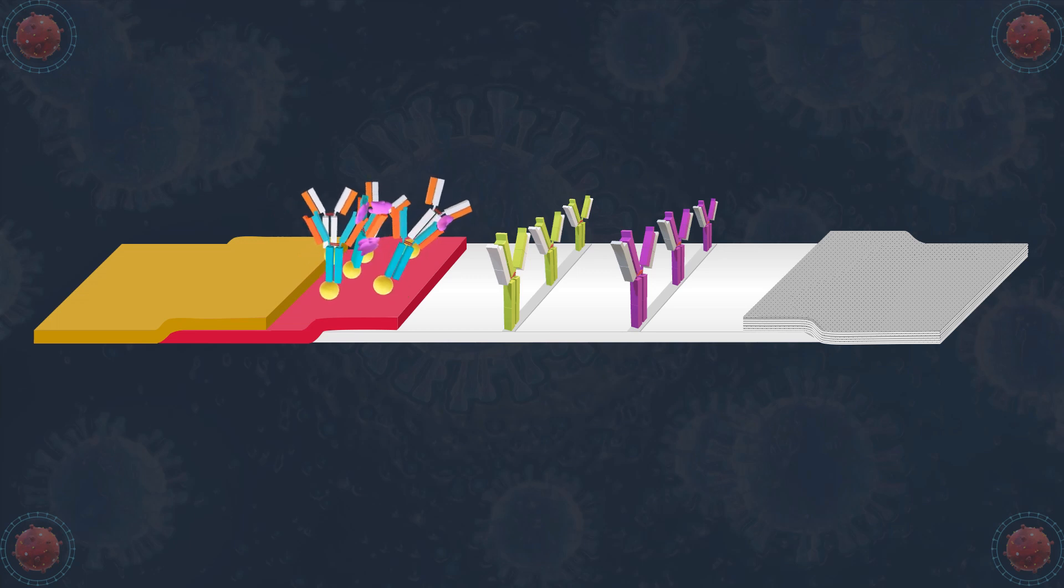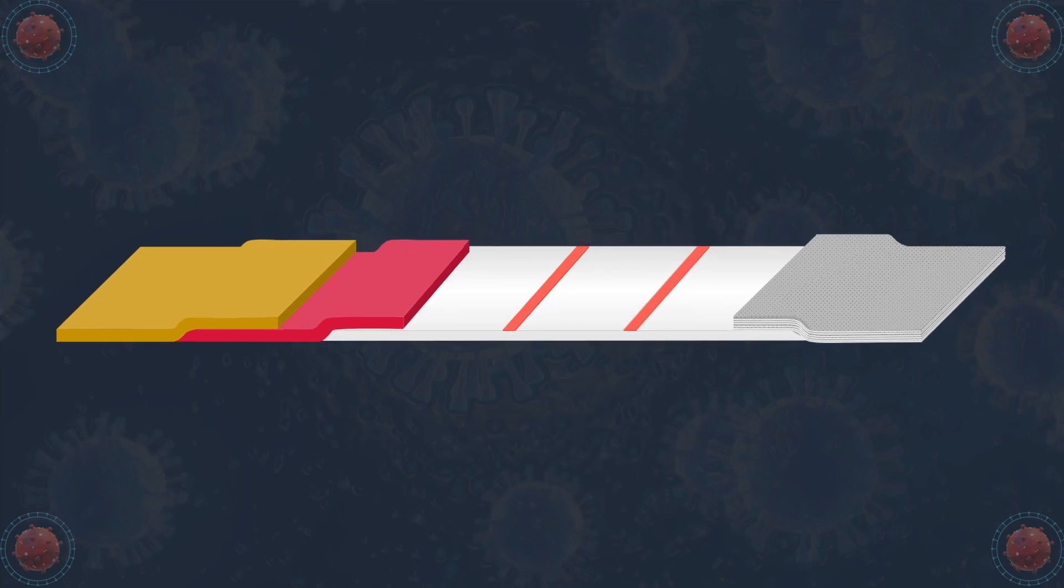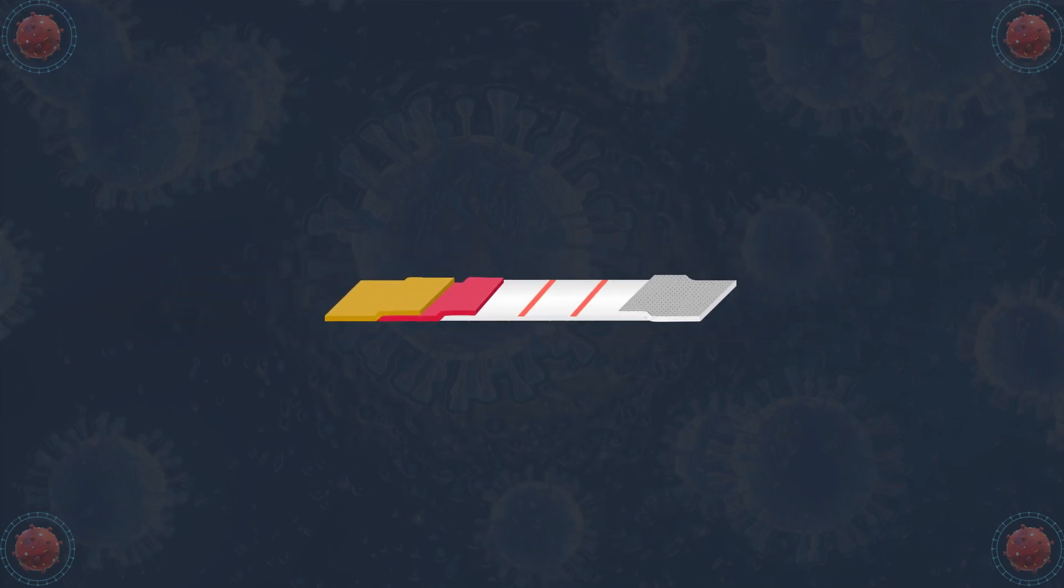The mixture then migrates laterally across the membrane by capillary action, and the anti-SARS-CoV-2 antibody antigen complex and chicken IgY antibodies are bound to the pre-coated anti-SARS-CoV-2 antibodies and anti-chicken IgY antibodies, respectively. Only those conjugated with antibodies gold nanoparticle complexes will produce a visible colored line.